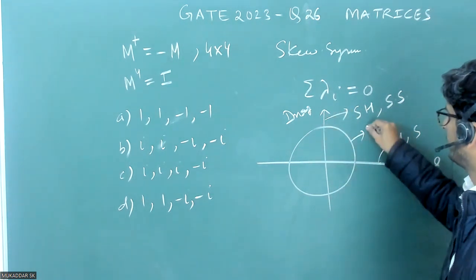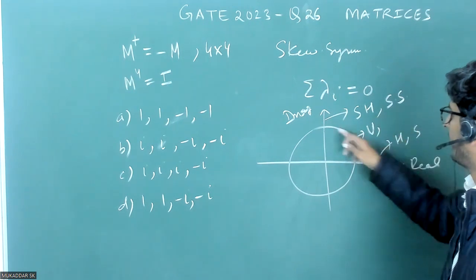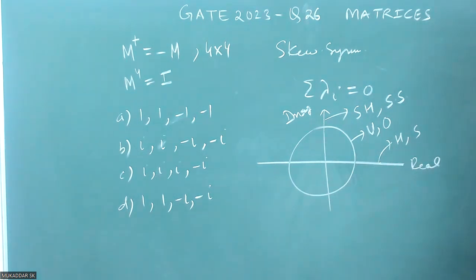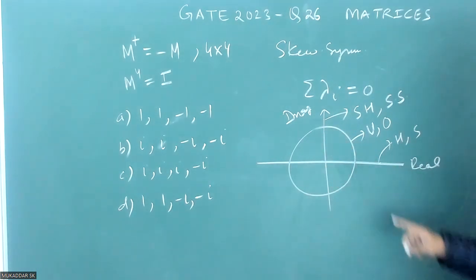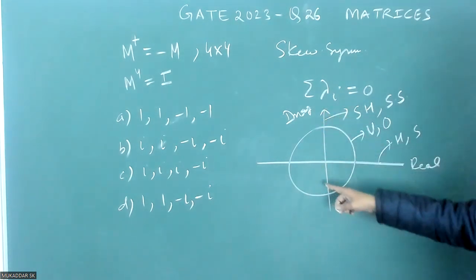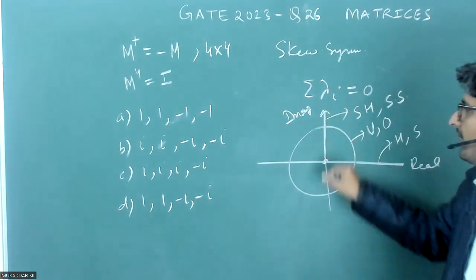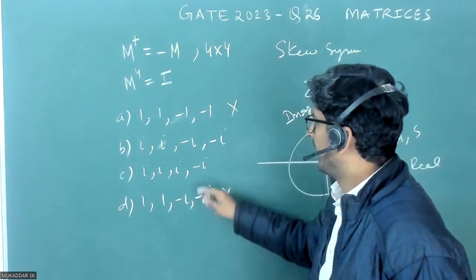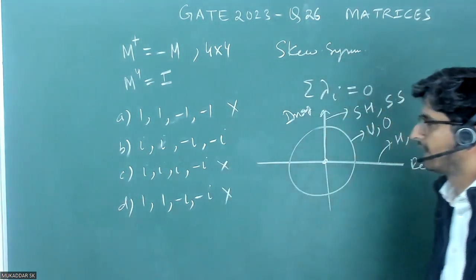Unitary and orthogonal matrices have eigenvalues on the unit circle — complex numbers with magnitude equal to one. For our matrix, eigenvalues can be zero or purely imaginary. Using this, we can eliminate the incorrect options: one option has eigenvalues that are not purely imaginary, another has a sum not equal to zero, so those are incorrect. The remaining option is correct.